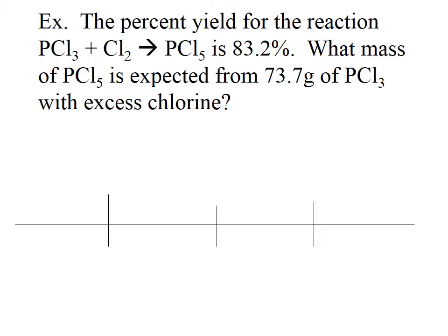This next example asks us: the percent yield for the reaction between phosphorus trichloride and chlorine to give phosphorus pentachloride is 83.2%. What is the mass of phosphorus pentachloride expected from 73.7 grams of phosphorus trichloride with excess chlorine? We have the balanced equation already and we need to dissect the question. We're given the percent yield and the amount of our reactant, but we don't have the amount of product. So we need to calculate our theoretical value first, and then use the percent yield equation to determine how much we actually got.